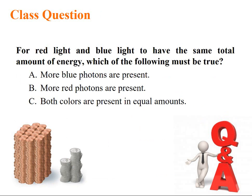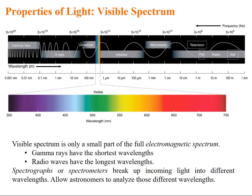For red light and blue light to have the same total amount of energy, which of the following must be true? Definitely, the answer is b, more red photons should be present, so that the amount of energy is same.